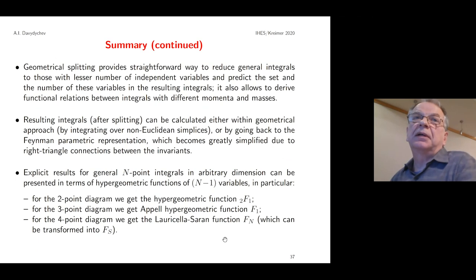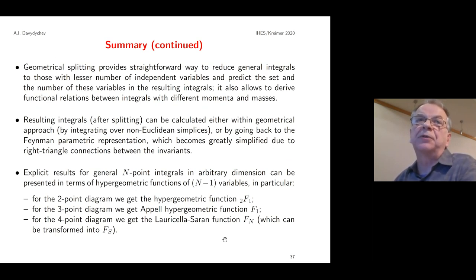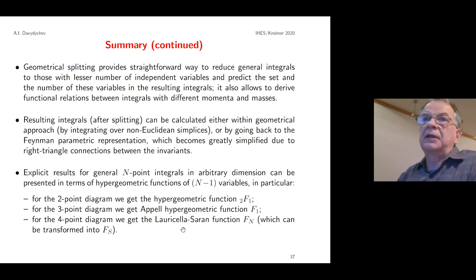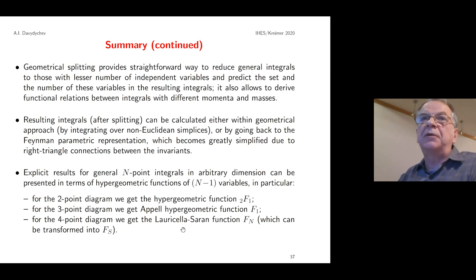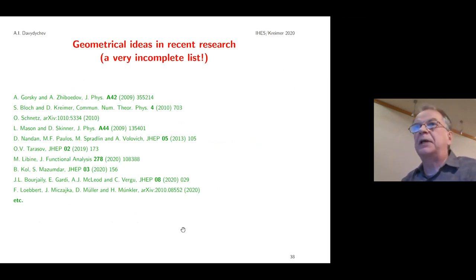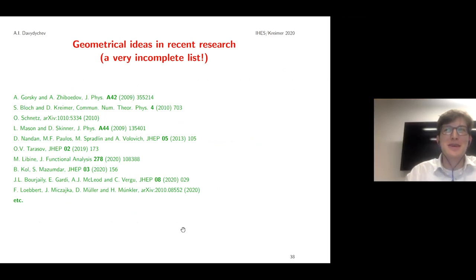Geometrical splitting provides a straightforward way to reduce general integrals to those with fewer independent variables. The resulting integrals can be expressed in terms of hypergeometric functions — specifically Gauss ₂F₁ for the two-point case, Appell F₁ for the three-point case, and Lauricella F_D for the four-point case. There are also several current papers using geometrical methods similar to or slightly different from this one; I've tried to collect some of them here.